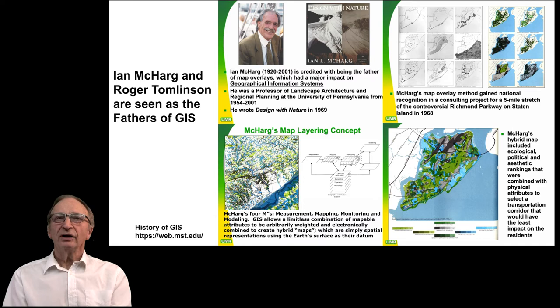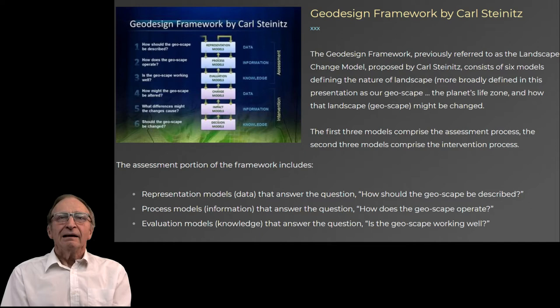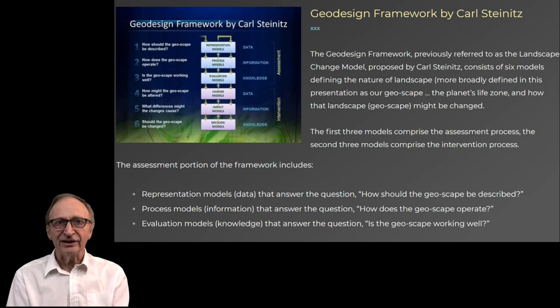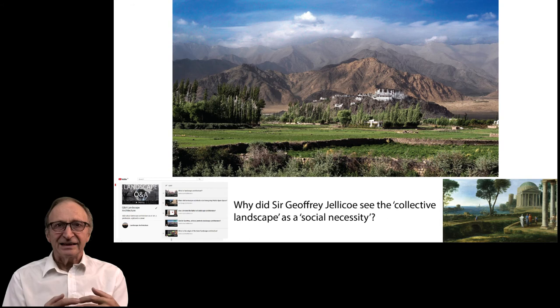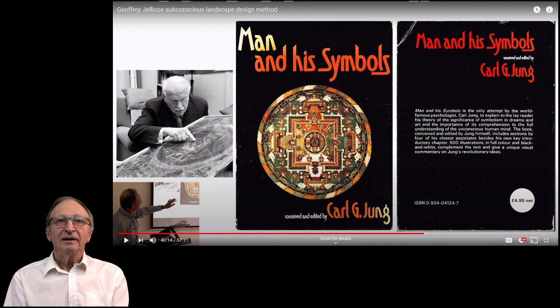Fifth, the emphasis on systematic, project-by-project environmental impact assessment and planning comes from Ian McHarg, and was first used in his project for the Richmond Parkway. The technical development of McHarg's overlay method into GIS and geodesign comes from two other landscape architects, Jack Dangermond and Carl Steinitz. The term 'collective landscape', which brings these themes together, is from Jeffrey Jellicoe — it appears on the cover of The Landscape of Man and derives from Carl Gustav Jung's work on the collective unconscious.